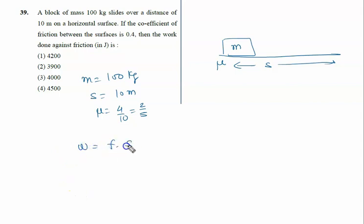Friction force is given by mu into normal reaction into displacement. Normal reaction is given by mg, so W equals mu into mg into displacement. Here mu is 2 by 5 and mass is 100 kilograms.